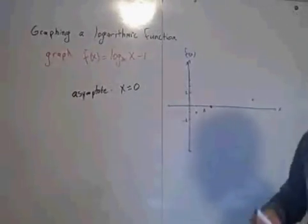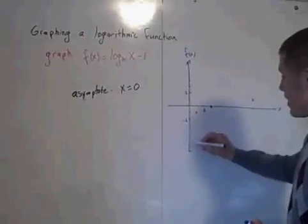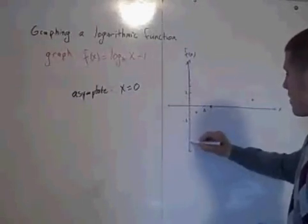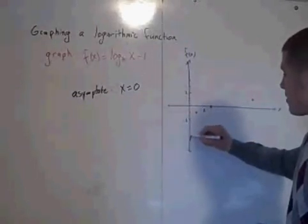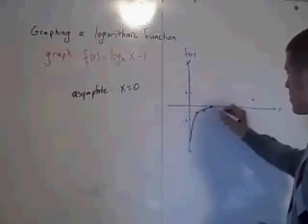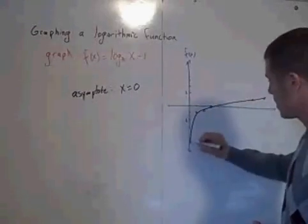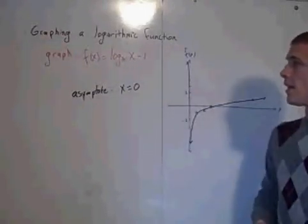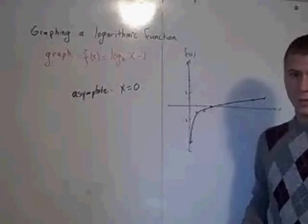So then you just want to connect the dots. So x equals 0 is the asymptote. And this is the graph of log base 3 of x minus 1.